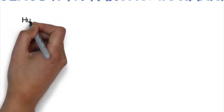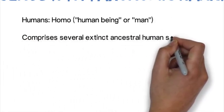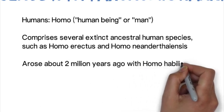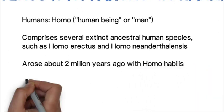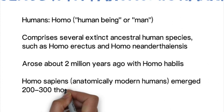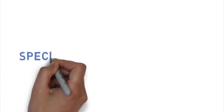The seventh taxonomic ranking is genus. Humans are part of the genus Homo, which in Latin means human being or man. This includes several extinct ancestral species such as Homo erectus and Homo neanderthalensis — the Neanderthals. The genus arose about two million years ago with Homo habilis, the first Homo species. These species migrated across Africa and Eurasia, and approximately 200,000 to 300,000 years ago, anatomically modern Homo sapiens emerged most likely throughout Africa.